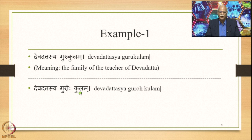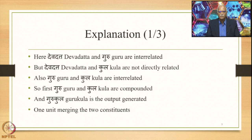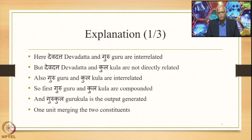Devadattasya Guruho Kulam — this is the family of the teacher of Devadatta. This is a very peculiar case. Here, Devadatta and Guru are interrelated, but Devadatta and Kula are not directly related. Also, Guru and Kula are interrelated. So first Guru and Kula are compounded, and Guru Kula is the output generated. This is one unit in which two constituents are merged, as far as both meaning and word form are concerned.